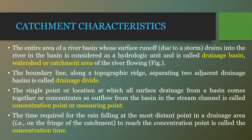Next topic: catchment characteristics. What is a catchment, watershed area, or drainage basin? The area of land draining into any water body is known as catchment area, watershed area, or drainage basin. The boundary line along a topographic ridge separating two adjacent drainage basins is called a drainage divide. The single point or location at which all surface drains from a basin come together as outflow from the basin in the stream channel is called a concentration point or measuring point.